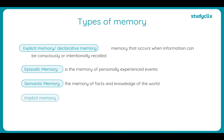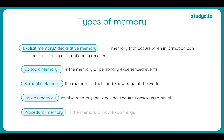We also have implicit memories, which is memory that does not require conscious retrieval — the opposite of explicit memory. An example of implicit memory is procedural memory, which is the memory of how to do things. Also, classically conditioned memories fall into the implicit category, as they are unconscious responses.